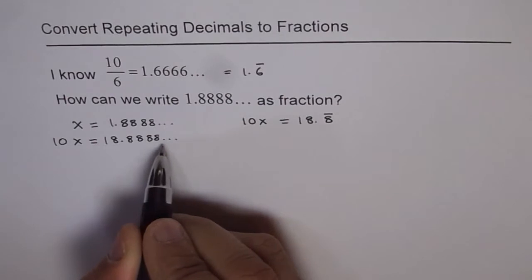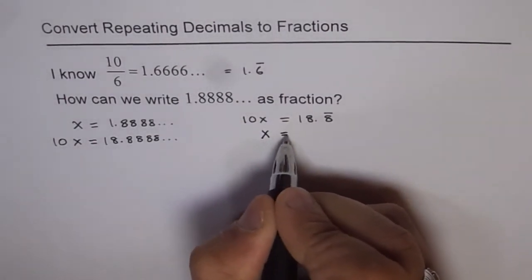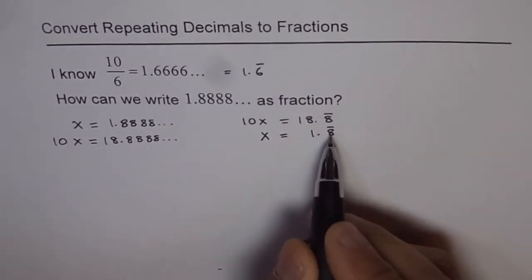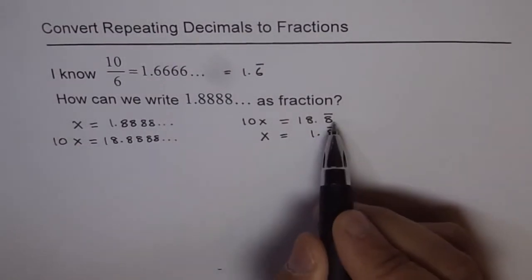Recurring means 8, 8, 8, 8, and x equals 1.8 recurring. Get used to this nomenclature, or you could write 8, 8, 8.